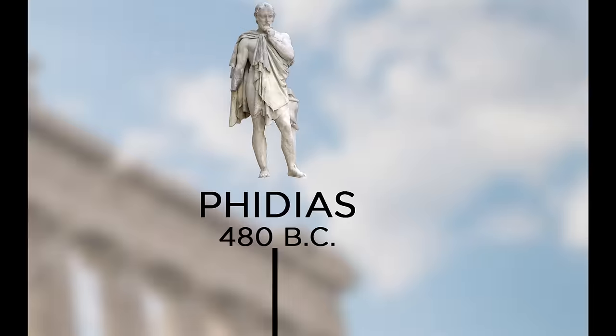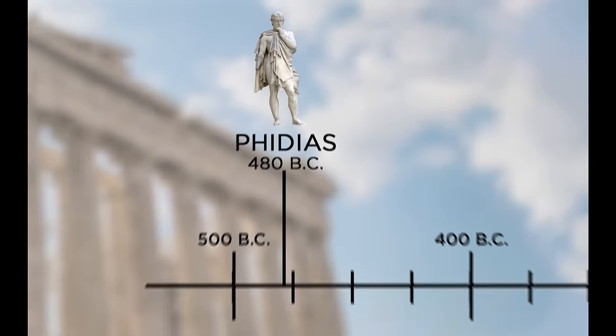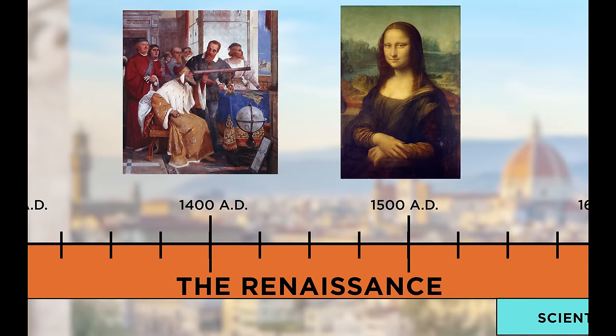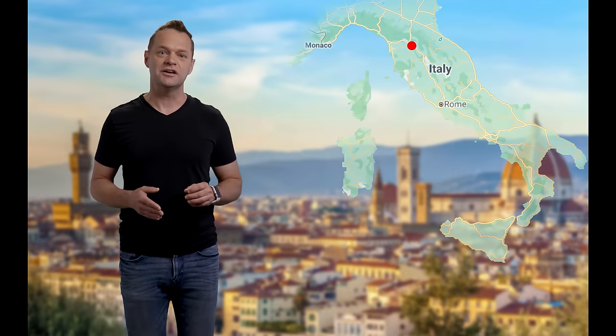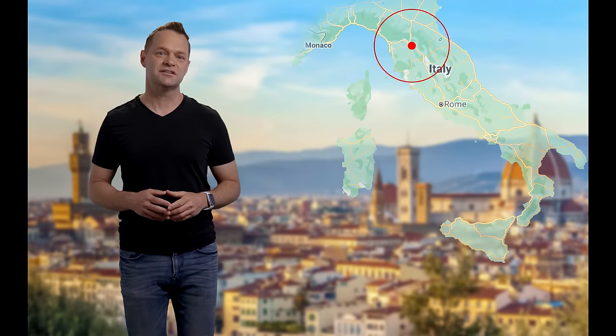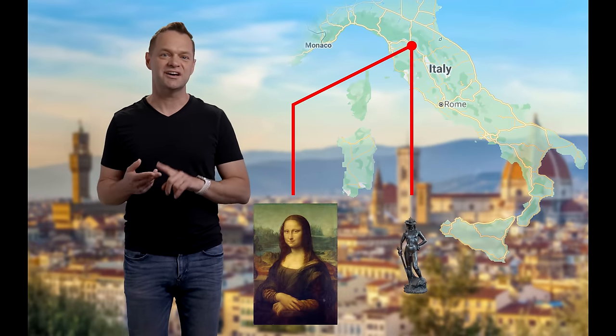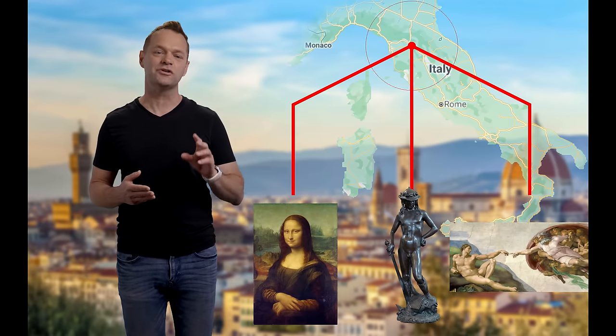However, to talk about the golden ratio in history, we have to fast forward to the Renaissance, a pivotal point where science and art intermingled and quite literally changed the world. Florence, Italy was the epicenter of the Renaissance, with artists like da Vinci, Donatello, and Michelangelo calling it home.